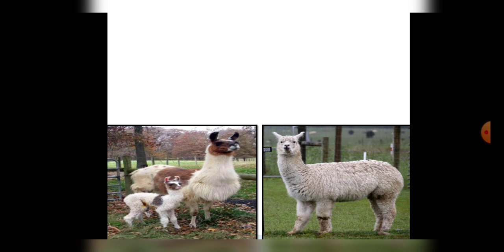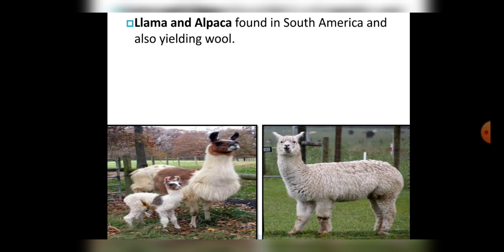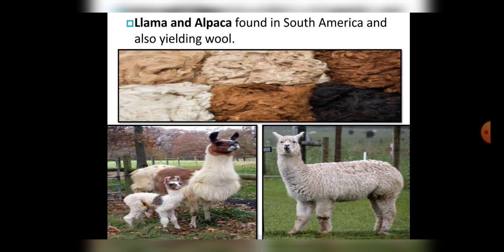Students, look at these two pictures. These are two common animals — Llama and Alpaca — which are found in South America. Their fleece provides us a very soft kind of fabric, something like this fabric which is obtained from Llama and Alpaca fleece.